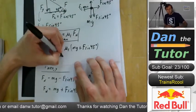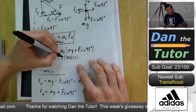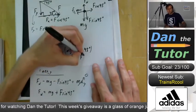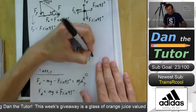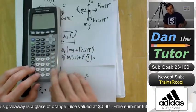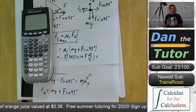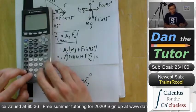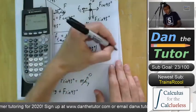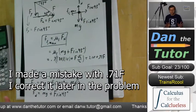Now we plug into the max static friction equation: FS_max = μS × (Mg + F sin45°) = 0.7 × (30×10 + F×√2/2). Breaking this up: 0.7 × 300 = 210, plus 0.7 × (√2/2) × F = 0.5F. So FS_max = 210 + 0.5F.